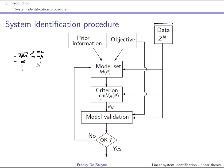Once the model set is chosen, you look at the criterion — in this 15-hour course always the sum of squares of prediction errors. You may filter the data, which produces an estimate and thus a model. You use validation data to validate the model; if satisfied you're done, otherwise you adapt the model structure. In some cases you may have to go back to data generation, rethink the experiment design, confirming that the system identification procedure is iterative.